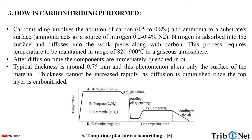Carbonitriding involves the addition of carbon, which is around 0.5 to 0.8%, and ammonia to a substrate surface. Ammonia acts as a source of nitrogen, which is around 0.2 to 0.4%. Nitrogen is absorbed into the surface and diffuses into the workpiece along with the carbon.